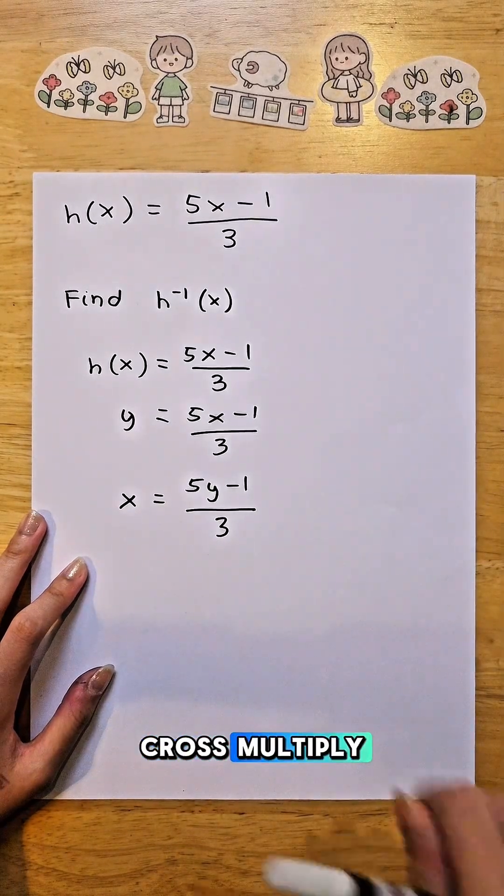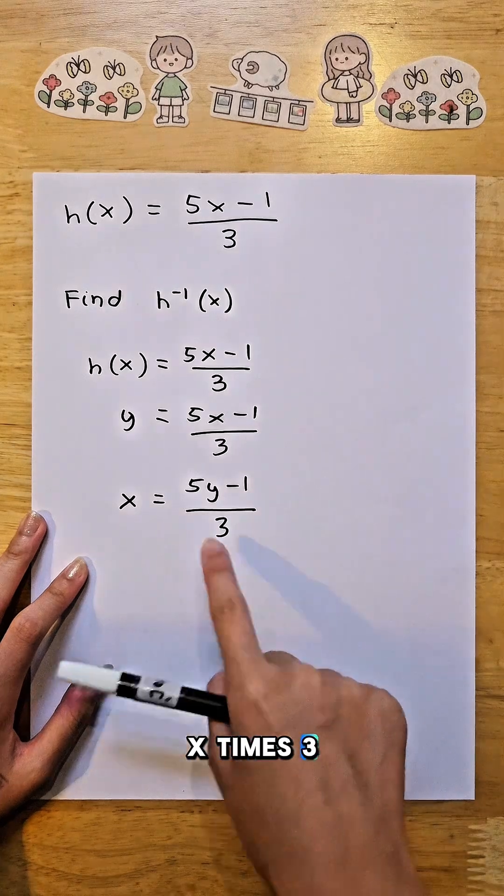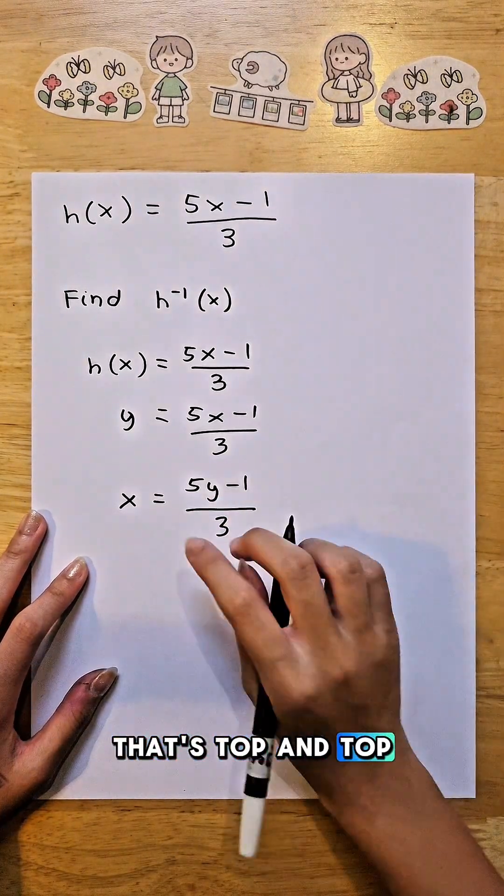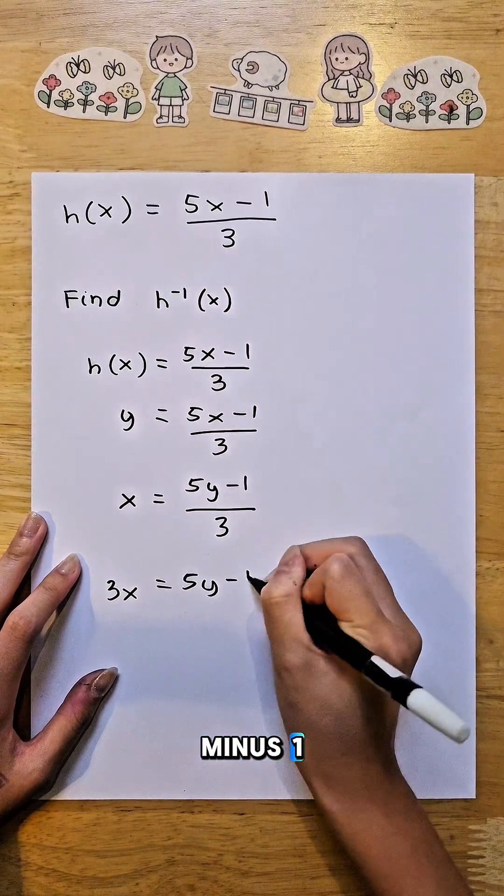we need to cross multiply. Cross multiply the top and bottom, not the top and top. So it's going to be x times 3, and not x times 5y minus 1, because that's wrong. That's top and top, so top and bottom. So it becomes 3x = 5y - 1.